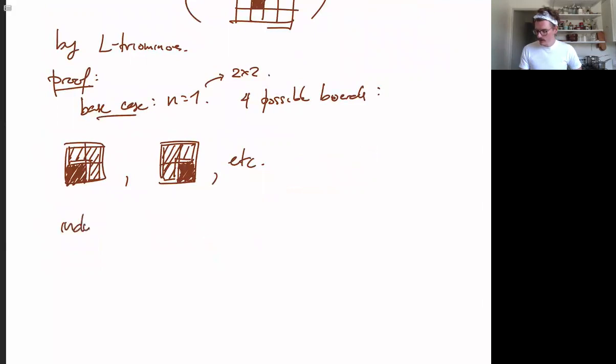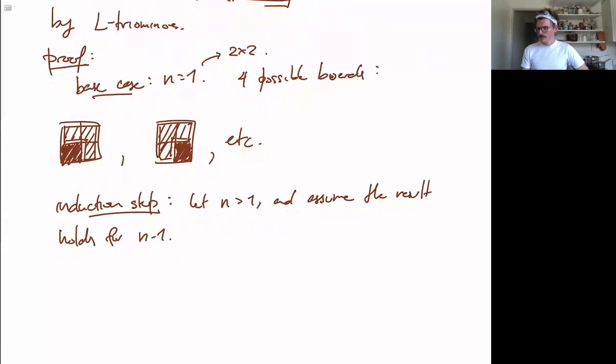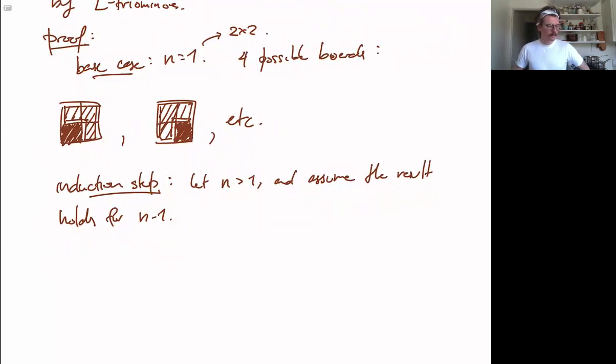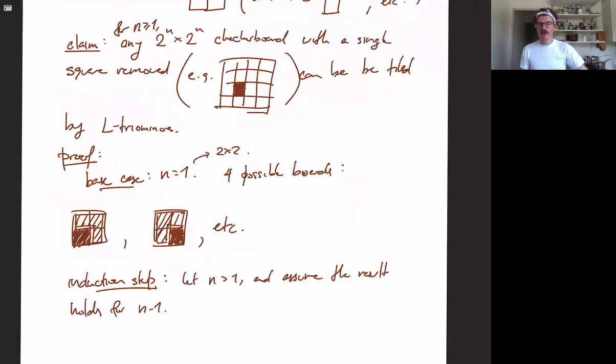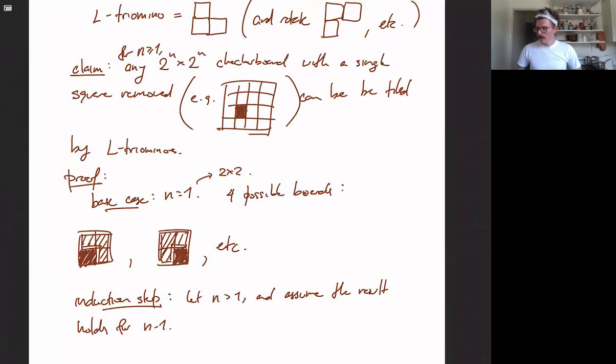So the induction step, let's let n greater than 1. And assume the result holds for n minus 1. So this time, let me actually not write out in detail what the inductive hypothesis is. When you're writing proofs, I encourage you, if you're having trouble, to write everything down very concretely. But if you are looking for brevity, you do not always need to write down everything.